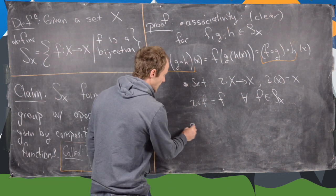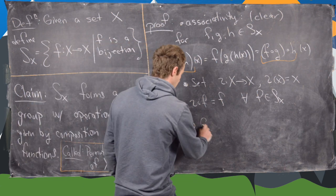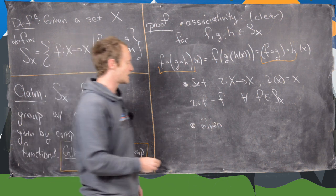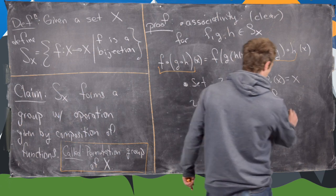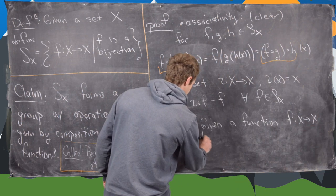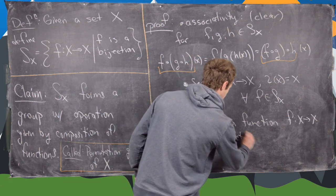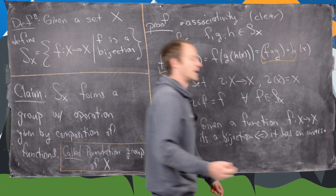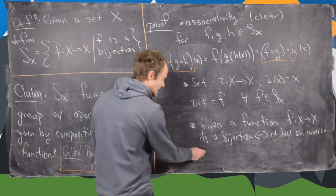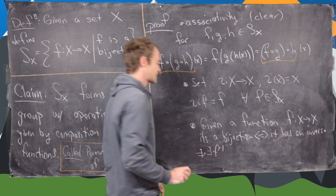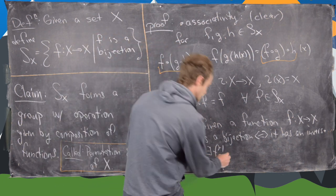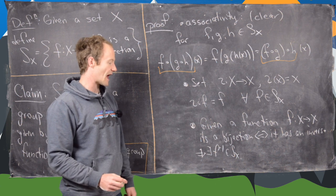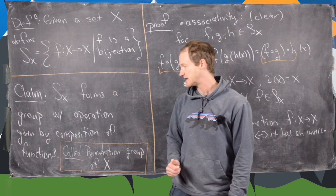What about inverses? Inverses are also clear. Recall from a previous course in discrete math or intro to proofs that a function f from x to x is a bijection if and only if it has an inverse. Having an inverse is the same thing as being a bijection. So there exists an f inverse, and if a function is a bijection, its inverse is also a bijection, which is in S_x. So we have associativity, an identity, and inverses — this is indeed a group.